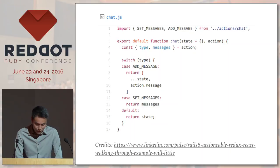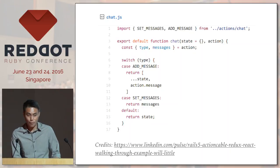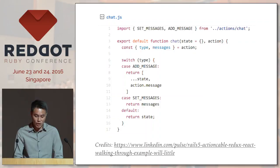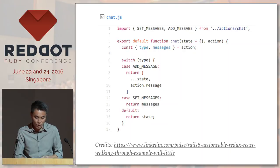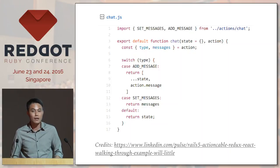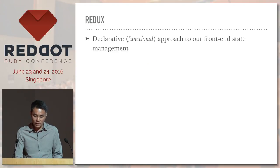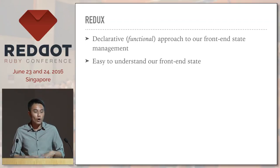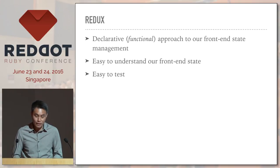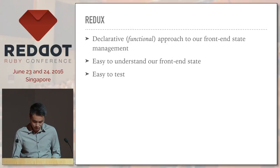With Redux, we take a very functional approach towards our front-end state management. Whenever we have a change — what we call an action — we write a function called a reducer that will mutate the state correctly and return it. In this example, given a new action called 'add message', we simply add the message into the state and return it, and let React render accordingly. This declarative, functional approach makes our front-end state and data mutation very easy to understand and test.